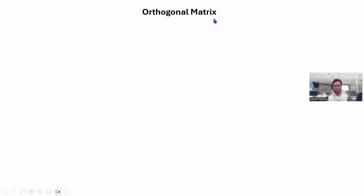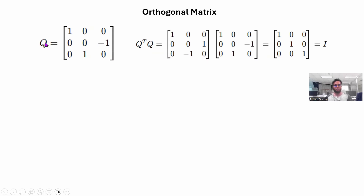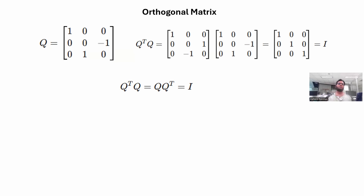The next thing we need to know is the orthogonal matrix. If you take the transposition of Q, Q-transpose, and multiply it by Q, you get the identity matrix I — where diagonal elements are 1 and all other elements are 0. This means Q-transpose times Q, and Q times Q-transpose, both equal I. Since multiplying a matrix by its inverse gives I, that means Q-inverse is the same as Q-transpose. That is the property of an orthogonal matrix.